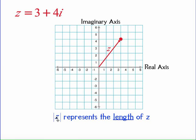The absolute value of Z represents the length of line Z, so the distance from the origin out to our point. That length is called the modulus. Sometimes we can write it mod Z, sometimes absolute value of Z.